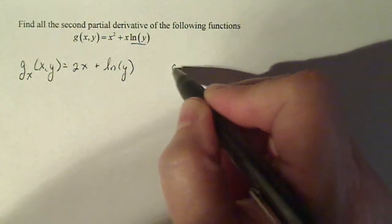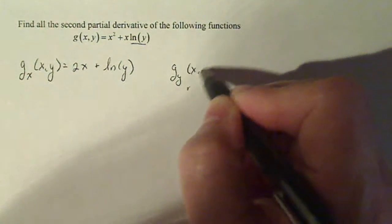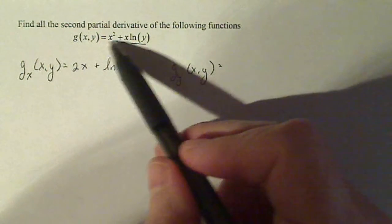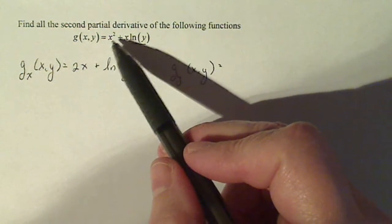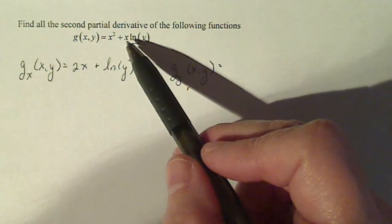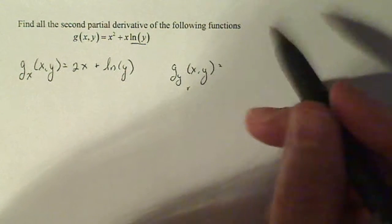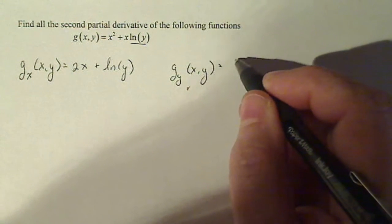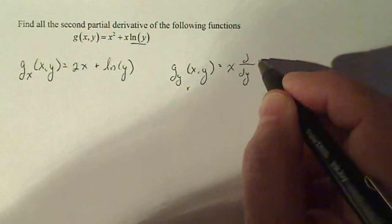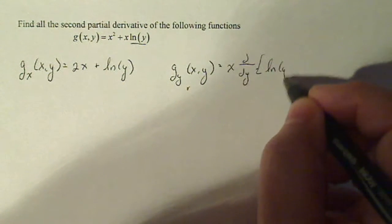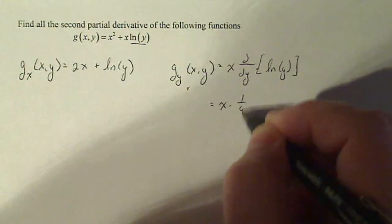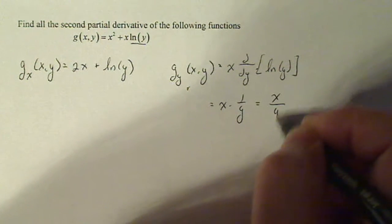Now for g sub y of xy, y is the variable and x is a constant. The derivative with respect to y of x squared is just 0. Here, x is constant and the natural log of y has the variable in it, so I take x, the constant, and just take the partial with respect to y of the natural log of y. That gives x times 1 over y, which is x over y.